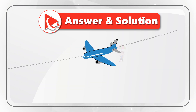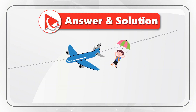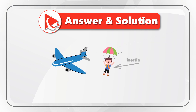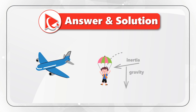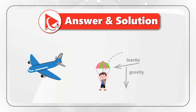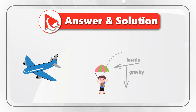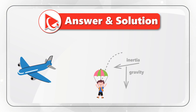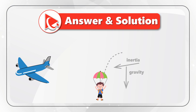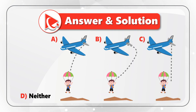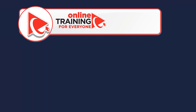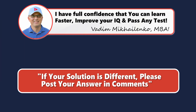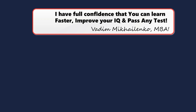After jumping, the parachutist initially maintains horizontal velocity due to inertia. Once outside the airplane, they accelerate downward due to gravity until reaching terminal velocity. The deployment of the parachute increases air resistance, allowing for a controlled descent and a safe landing. The closest answer that describes this solution is choice A. If that is not what you got, please make sure to post your solution and rationale in comments so we can all learn.